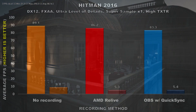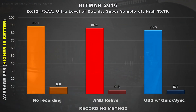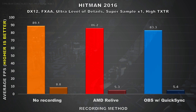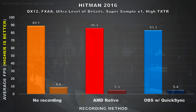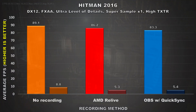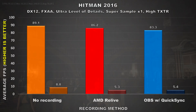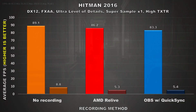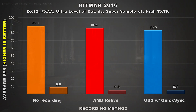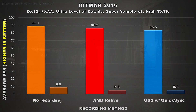Moving on to Hitman 2016, without recording we obtained an average of 89.1 FPS. The minimum hit was 8.8 FPS, but that was mostly occurring during scene transitions rather than actual gameplay. Hitman 2016 shows a similar scenario to Rise of the Tomb Raider. Recording with Relive, the average drops to about 86.2 FPS — only about a 3 FPS difference. OBS shows the average dropping by around 6 FPS, while the minimums were tied, so Relive is still doing a slightly better job at maintaining original performance.